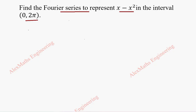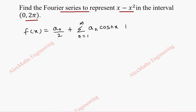The Fourier series formula is f(x) = a₀/2 plus sigma n=1 to infinity of aₙ cos(nx), plus sigma n=1 to infinity of bₙ sin(nx).